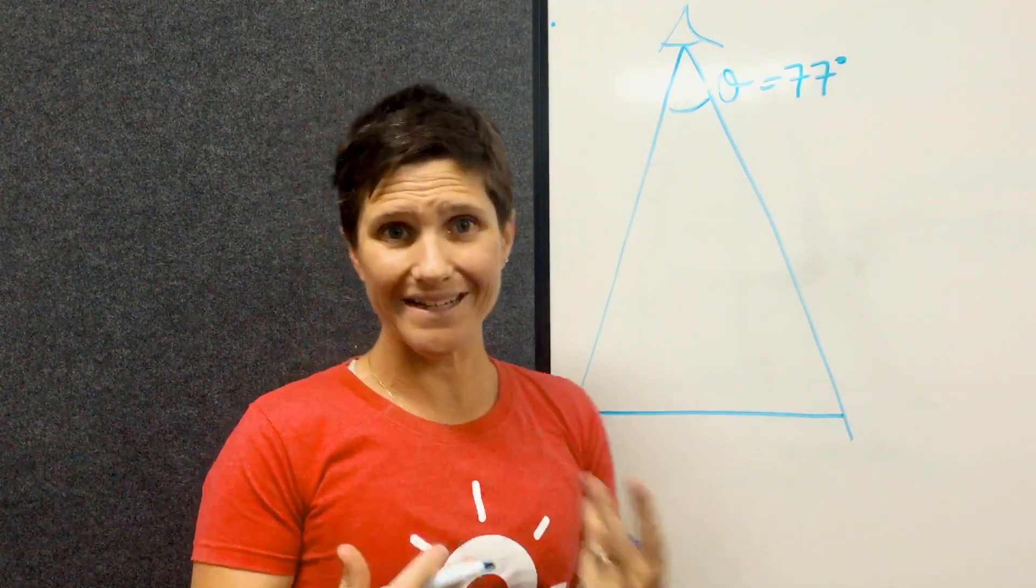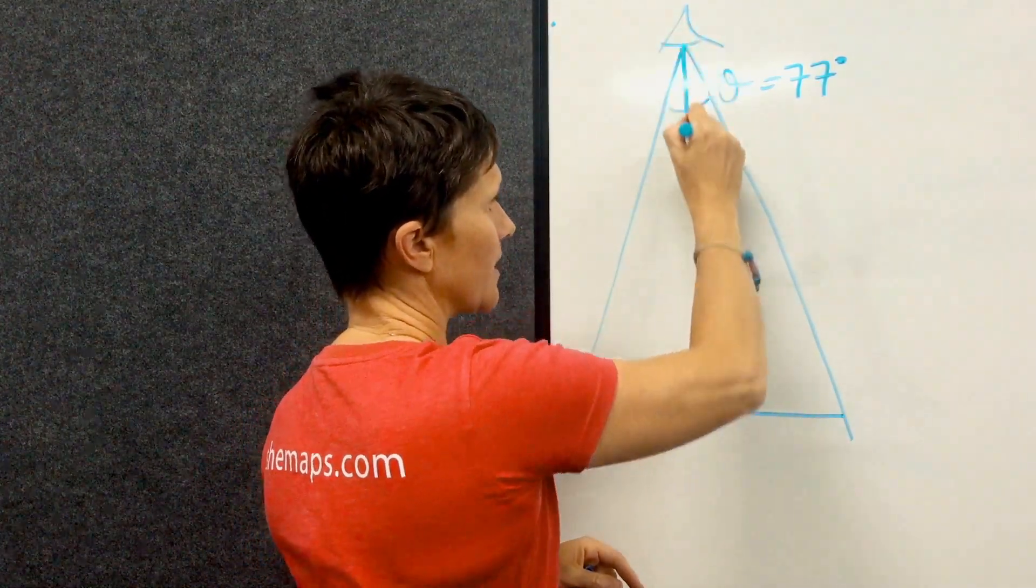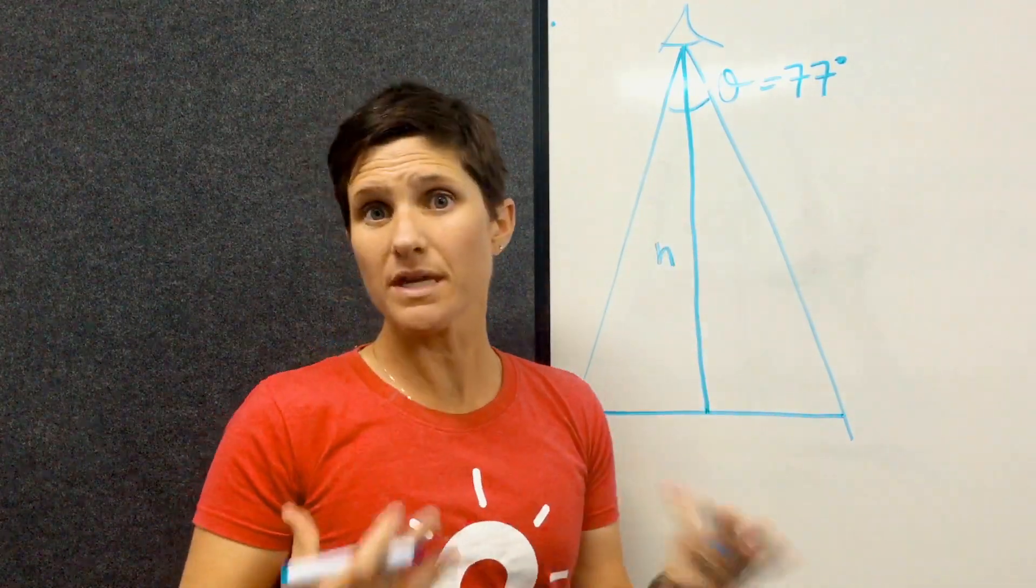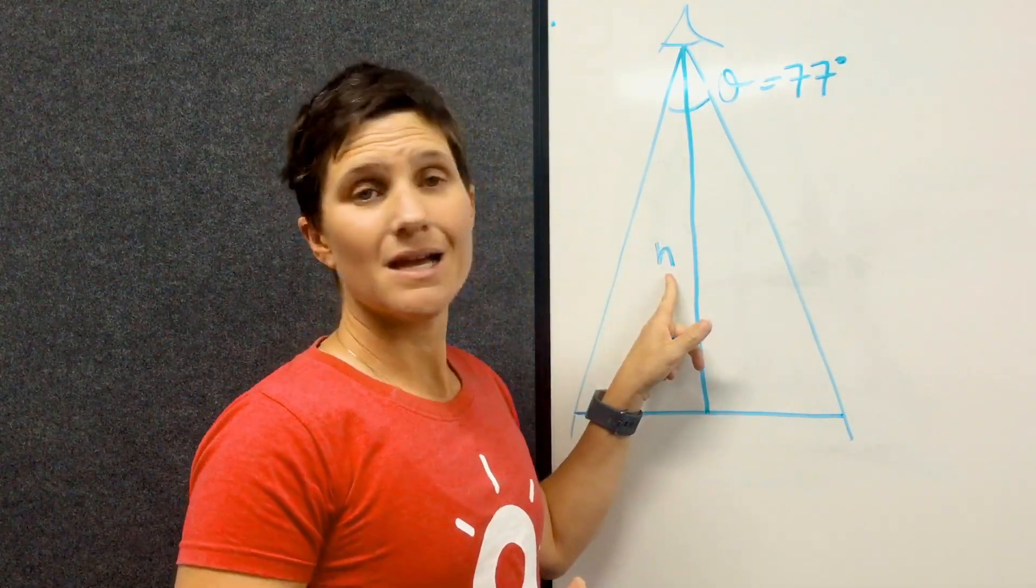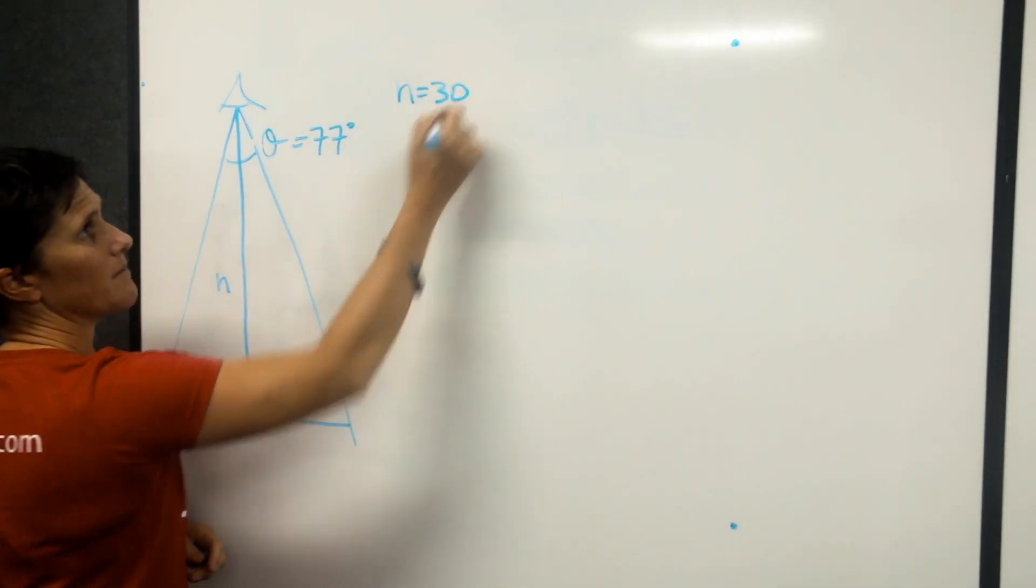Now what we can change is the height at which we fly. So let's have a look at this height here. I'm going to call that H. So we can set that. I'm going to set my height, my flying height at 30 meters. So H equals 30 meters.